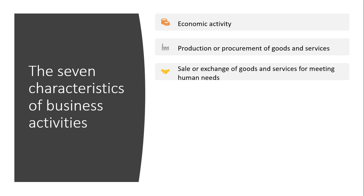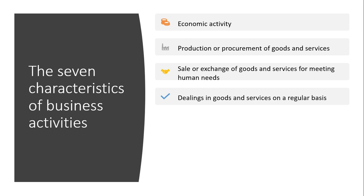For example, cooking food at home for the family is not business, but cooking food and selling it to others in a restaurant is business. Thus, one essential characteristic of business is that there should be sale or exchange of goods or services between the seller and the buyer. Business involves dealings in goods or services on a regular basis.